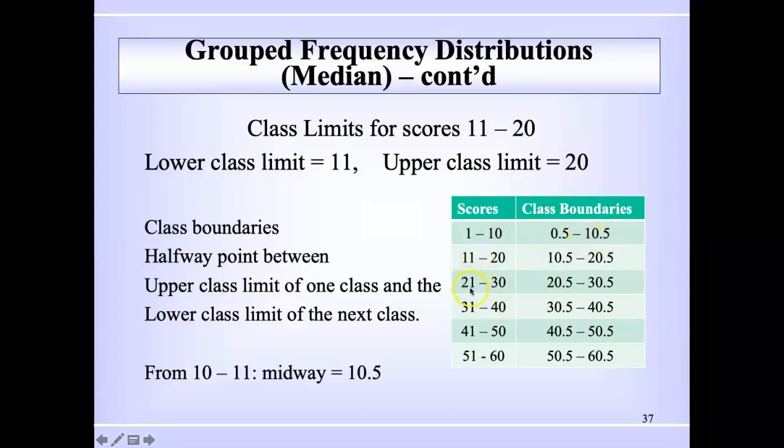If you're looking at this class 21 to 30, the lower boundary is 20.5, and to the right 30.5. So these are boundaries. When we identify which range is our median range or our median class, we just want to identify the lower boundary for that class, and that gives us L1.